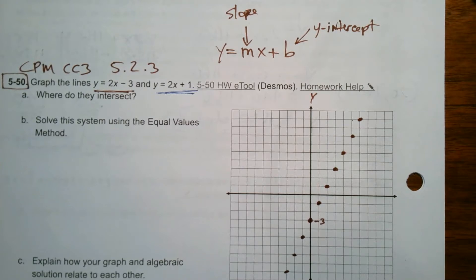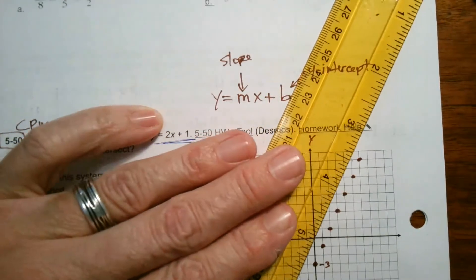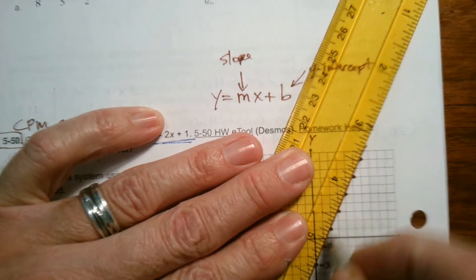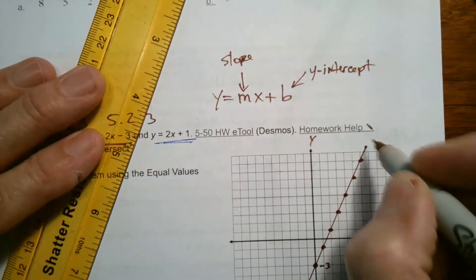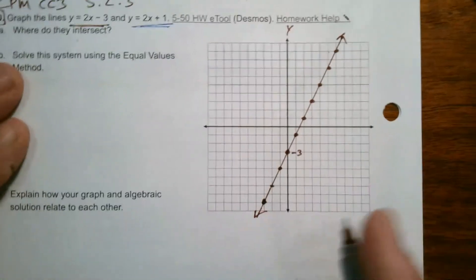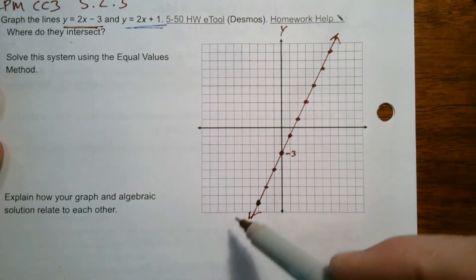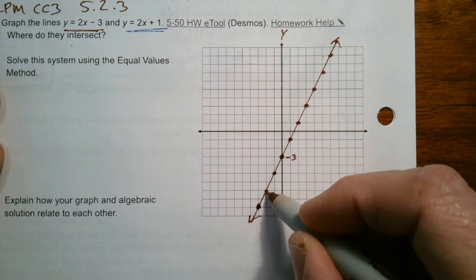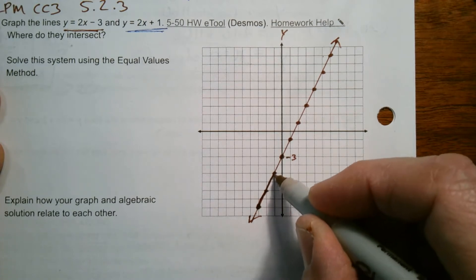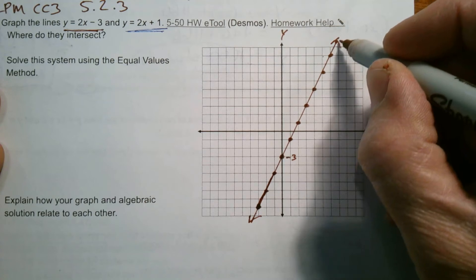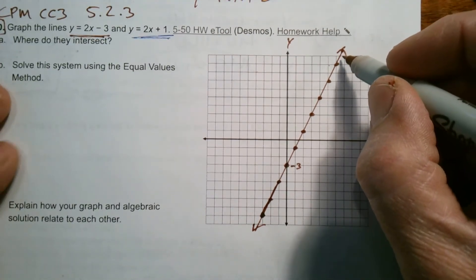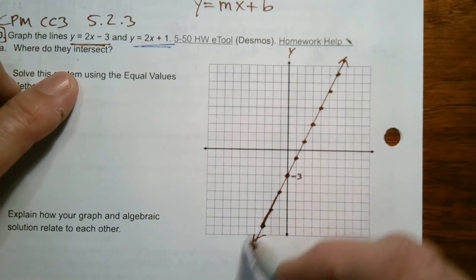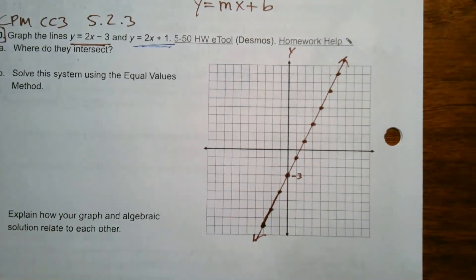We connect the dots of this line. Why do we use a solid line with arrows? Because every single point that exists along this whole solid line is full of coordinates that would work for that equation — that make that equation true. That's why we graph that line and that's what it represents.